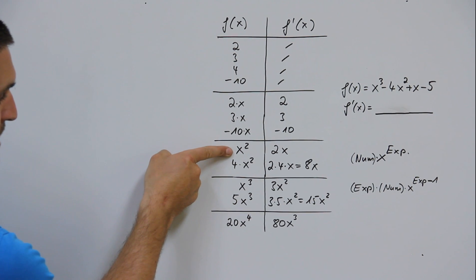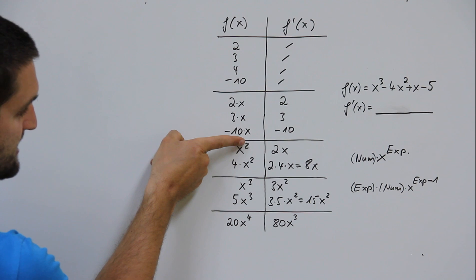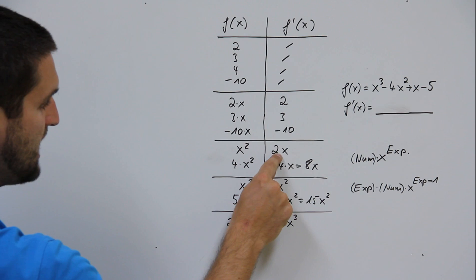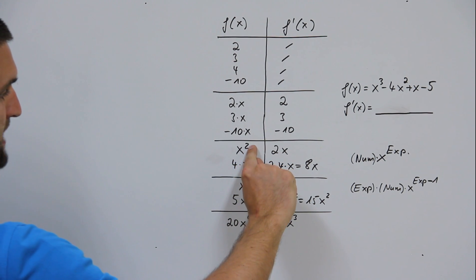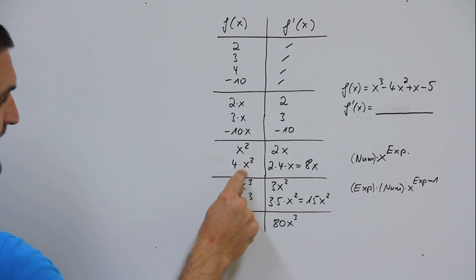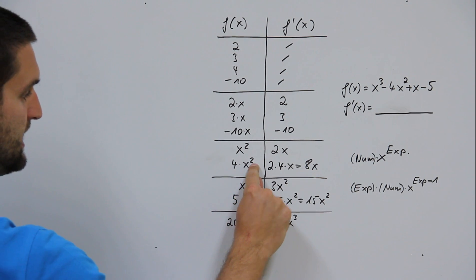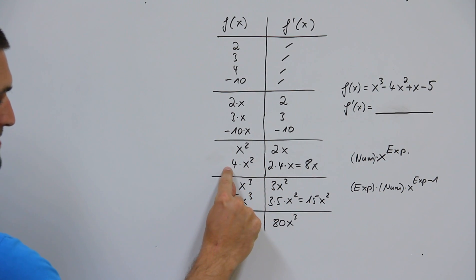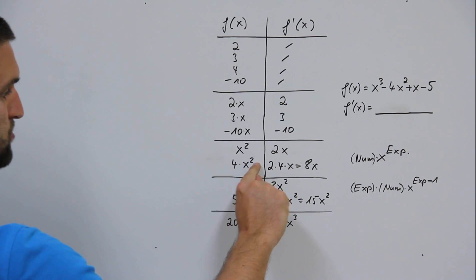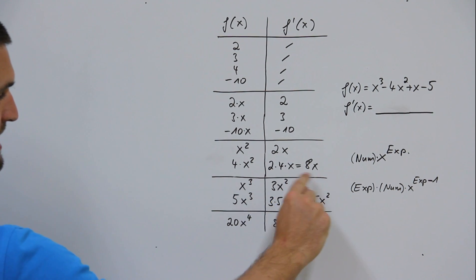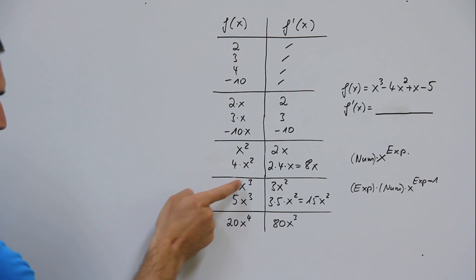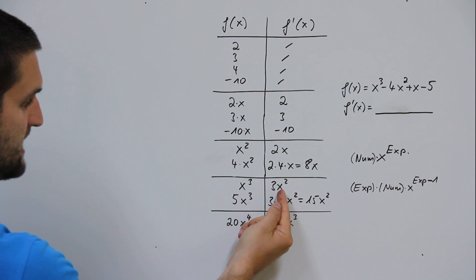Let's try it. x to the power 2: the exponent times the number in front, which is 1, is 2 times x to the exponent minus 1, which is 1. So the derivative is 2x. 4 times x to the power 2: the exponent times the number in front is 2 times 4 times x, and 2 minus 1 is 1, which gives 8 times x.